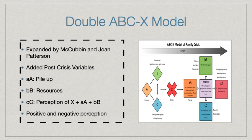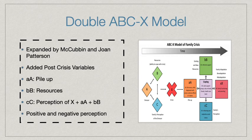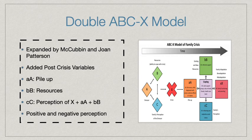For the double ABCX model, it was expanded by McCubbin and Patterson, who added post-crisis variables: AA, BB, CC, and XX. AA is a pile-up of stressors on top of the initial stressor. BB is existing resources plus new resources. CC is the perception of stressors that led to crisis, plus the family's perception of X, AA, and BB. There are two types of perceptions: positive, which helps the family cope better with the stressor, and negative, which means the family won't cope as well.